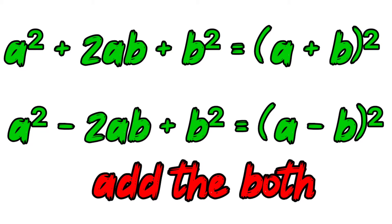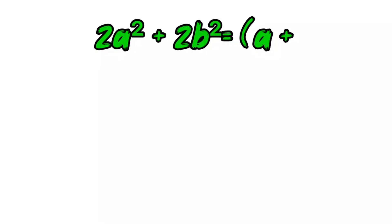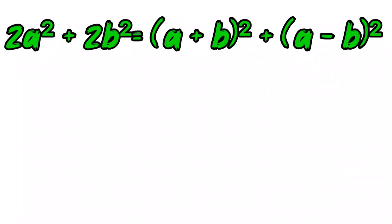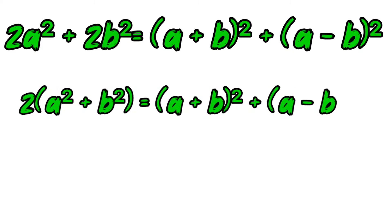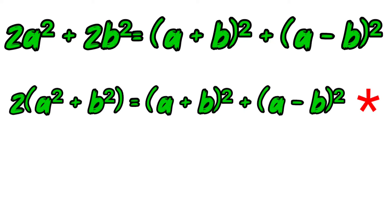Add the both. 2A square plus 2B square is equal to A plus B whole square plus A minus B whole square. 2 into A square plus B square is equal to A plus B whole square plus A minus B whole square.